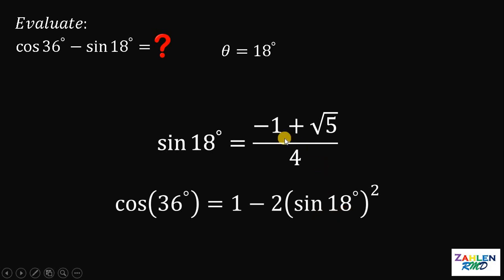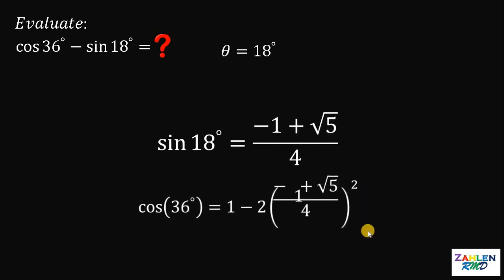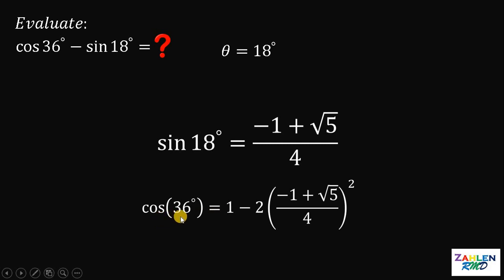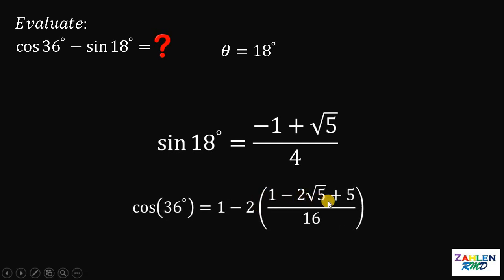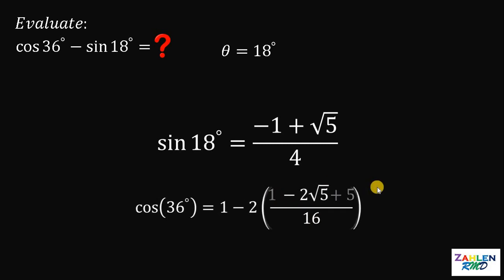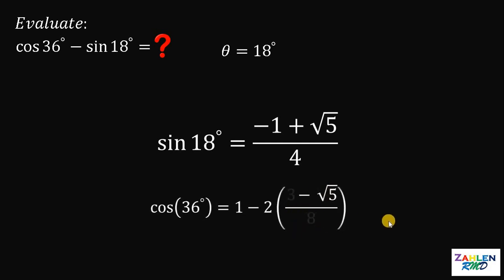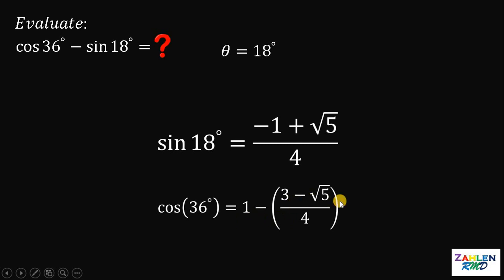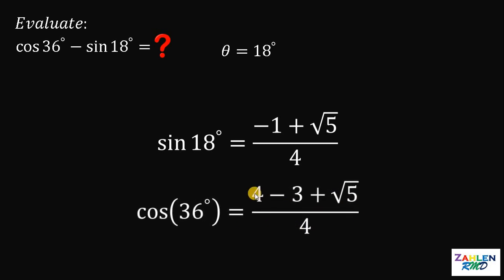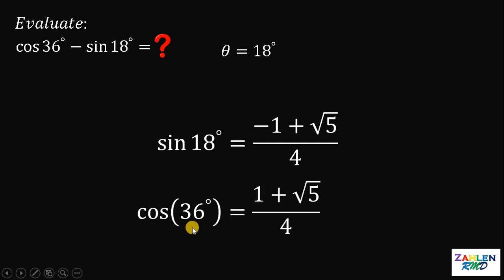Substituting sine of 18 degrees equals negative 1 plus square root of 5, over 4, and squaring it, we get 1 minus 2 times square root of 5 plus 5, over 16. Now 1 plus 5 equals 6, and canceling the factor of 2, we simplify to 1 minus the quantity 3 minus square root of 5, over 4. This gives 4 minus 3 plus square root of 5, all over 4, and 4 minus 3 equals 1. Therefore, cosine of 36 degrees equals 1 plus square root of 5, over 4.